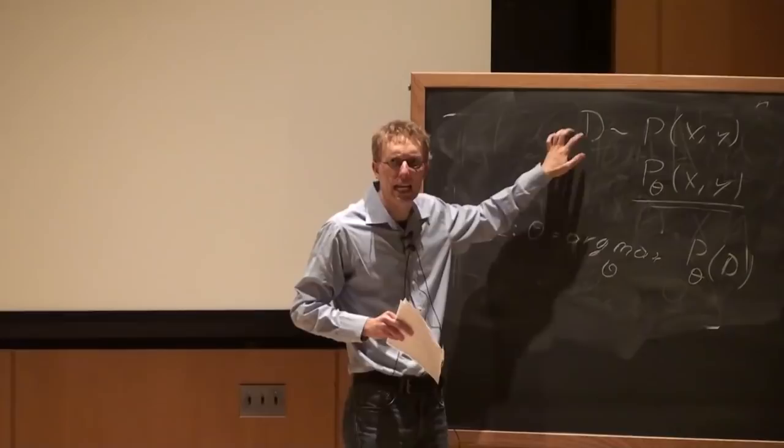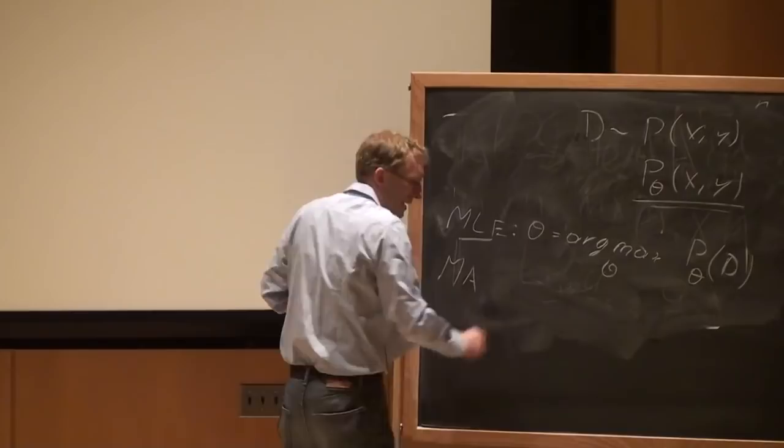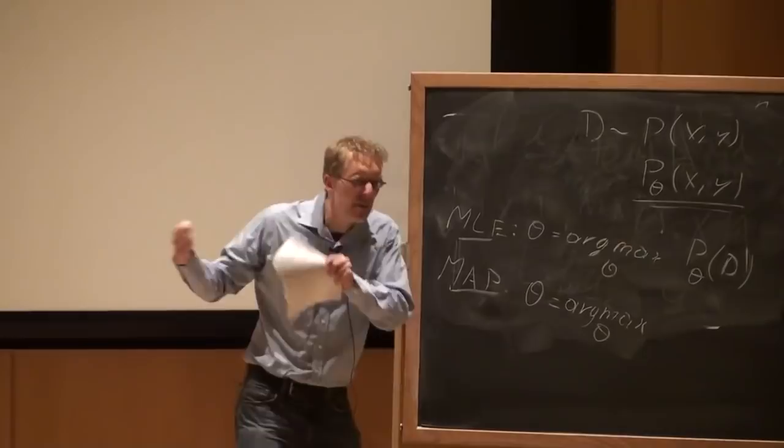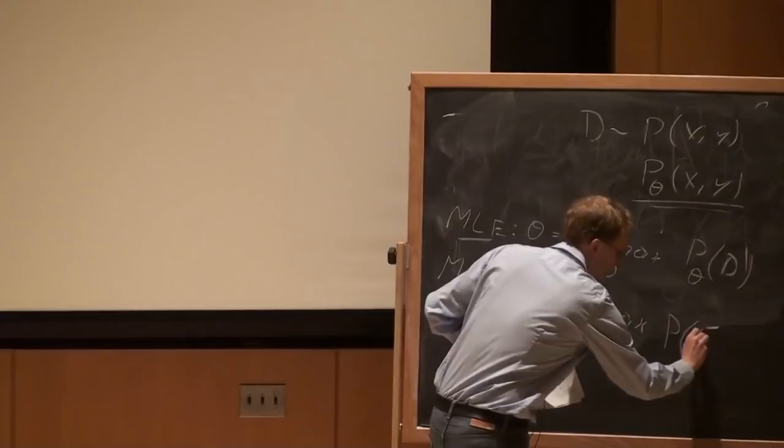The second thing is maximum a posteriori estimation. Here we flip things around: given that we observe the data, what's the most likely theta? So we want to maximize the probability of theta given that we observed the data.